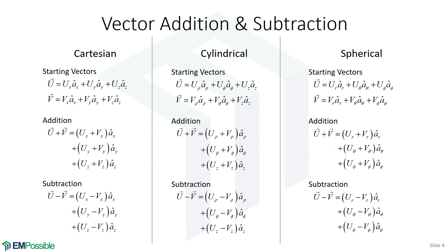Here's a summary of vector addition and subtraction for three of the most common coordinate systems used in electromagnetics. What we can see is it's all the same — we're just manipulating the different vector components.